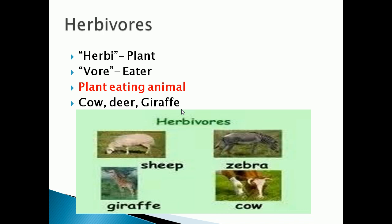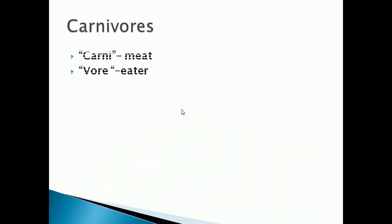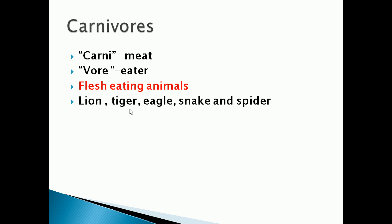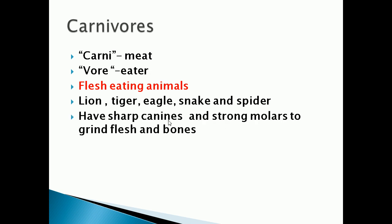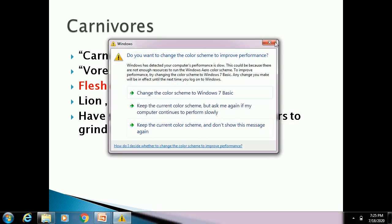Next is carnivorous. The word 'carni' means meat and 'vore' means eater. So meat-eating, or flesh-eating animals are called carnivorous. Examples of carnivorous are lion, tiger, eagle, snake, and spider. How do they eat the flesh of other animals? They have sharp canine teeth and use strong molars to grind the flesh and bones of other animals.